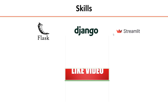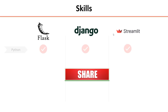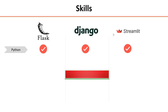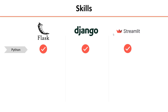When it comes to skills, the skills required for Flask, Django, and Streamlit is obviously Python. We should know Python to create applications in Flask, Django, and Streamlit. But in Streamlit, we don't require advanced Python programming like multi-threading, object-oriented programming, etc. That is not required in Streamlit.